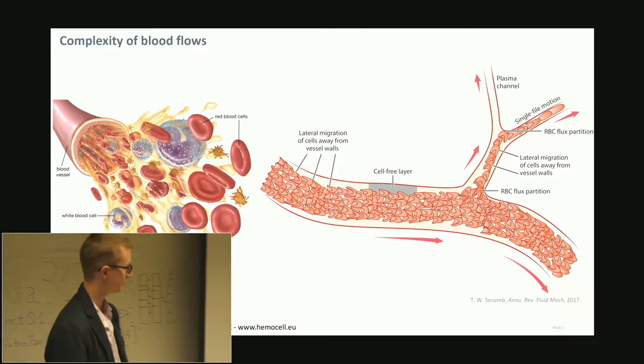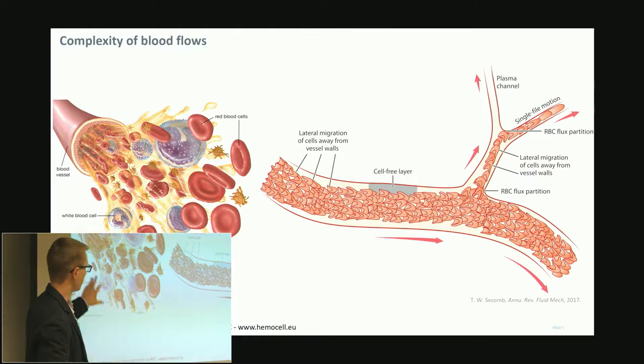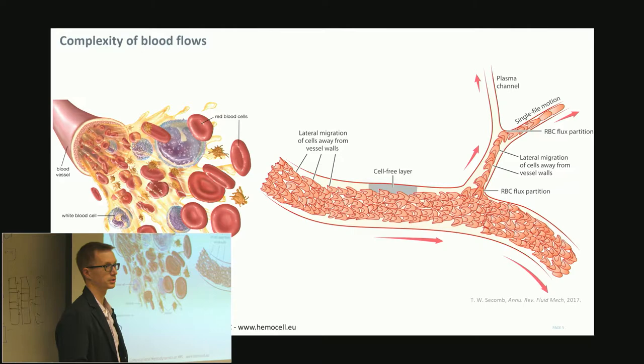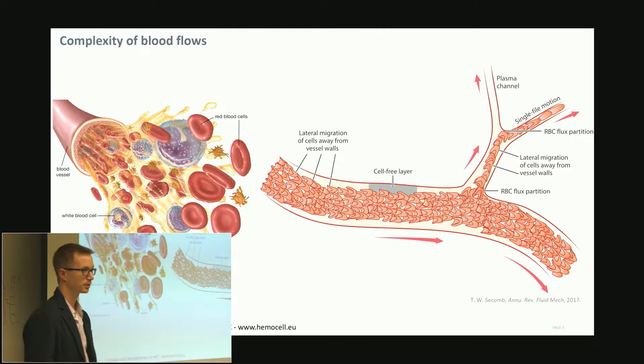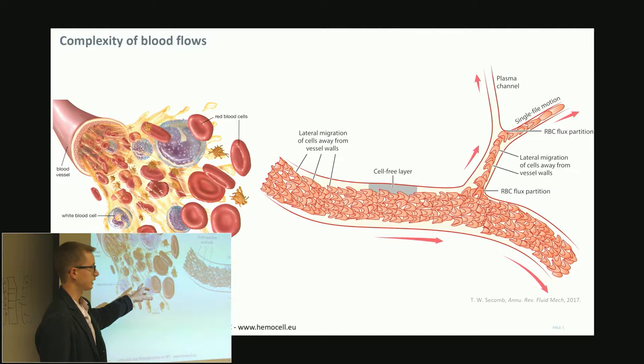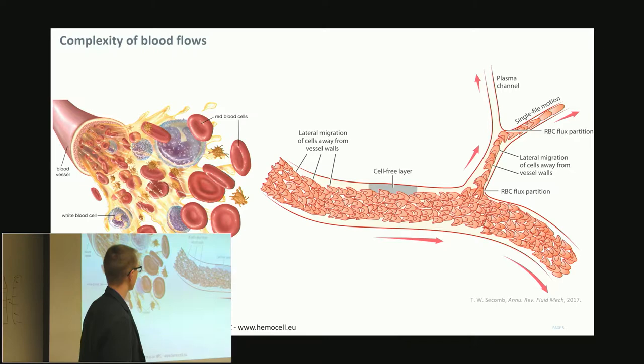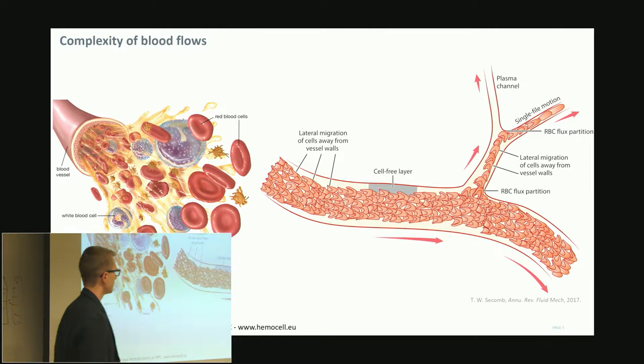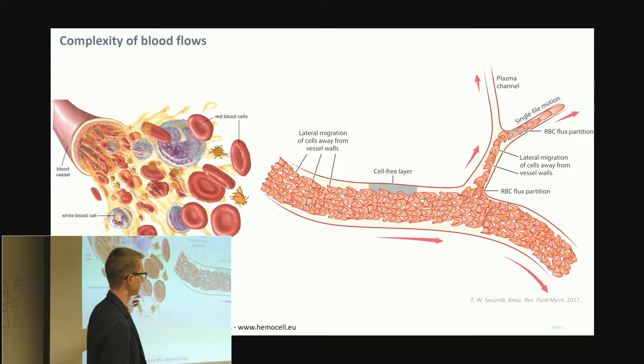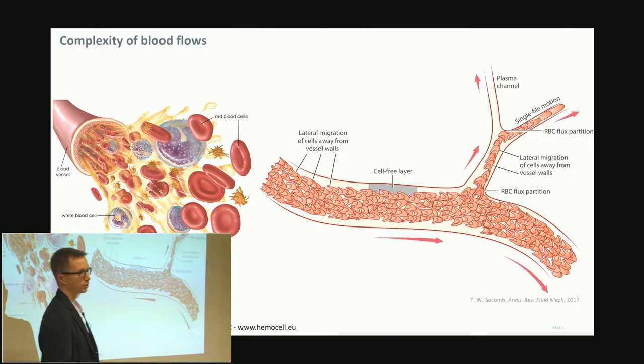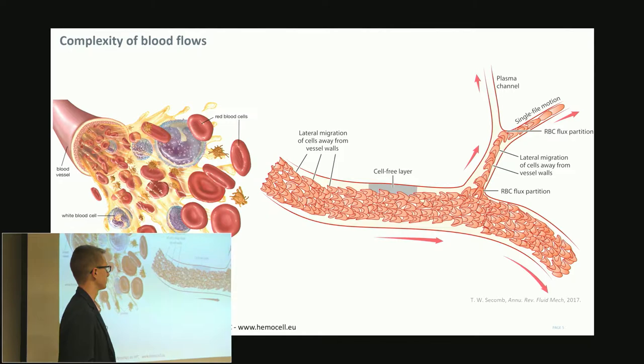For this talk, blood is constituted of blood plasma — basically water with a few proteins, slightly more dense — and quite a few cells flowing in it: primarily red blood cells and platelets. The point is that we have a really dense suspension where the base is blood plasma and almost half the volume, around 40%, is made up of deformable red blood cells. So we have a dense suspension with deformable objects, which is really not easy to handle.